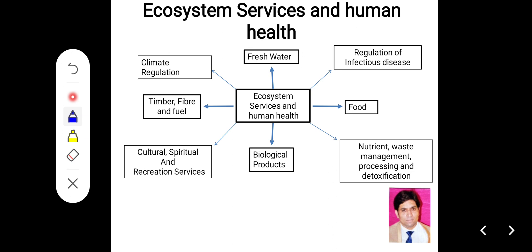Now I am going to explain about the ecosystem services and health. The different ecosystem services are mentioned in the slide. The ecosystem provides the basic needs of life. The causal link between environmental change and human health is complex, but often indirect, displayed in space and time, and dependent on a number of modifying forces. For example, alternation in the pattern of infectious disease due to deforestation or climatic change.